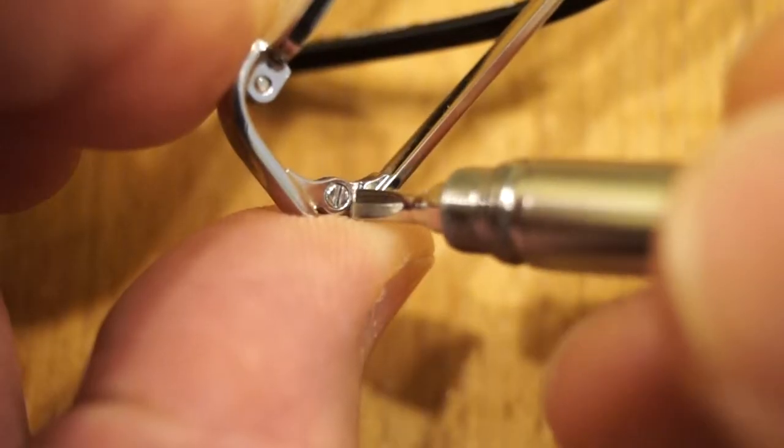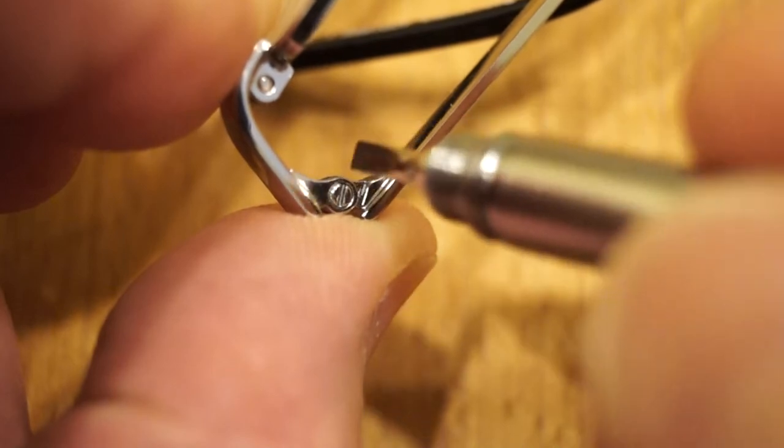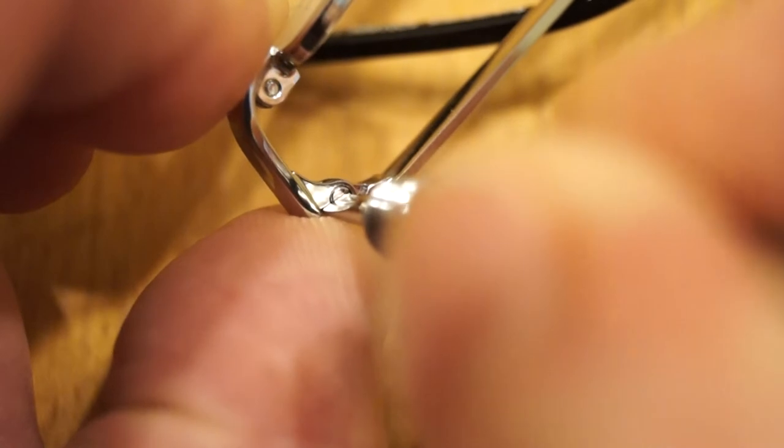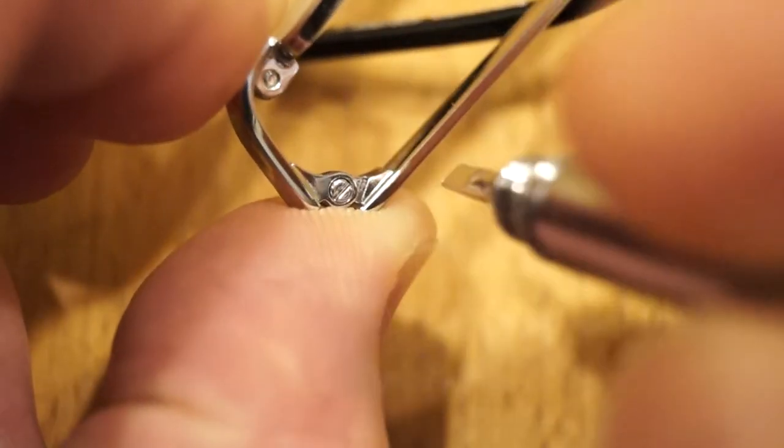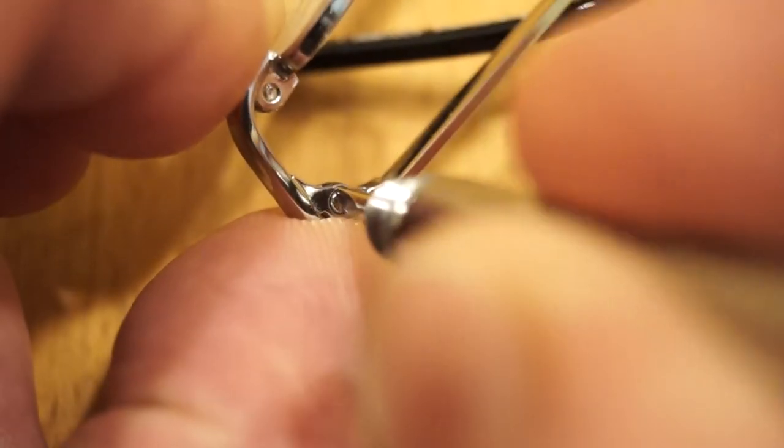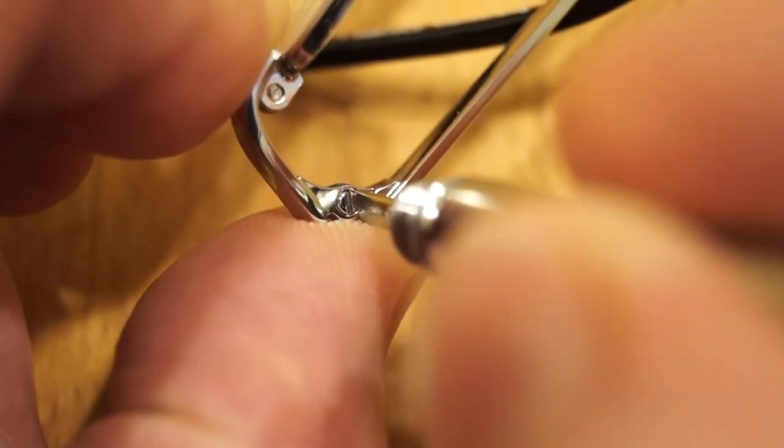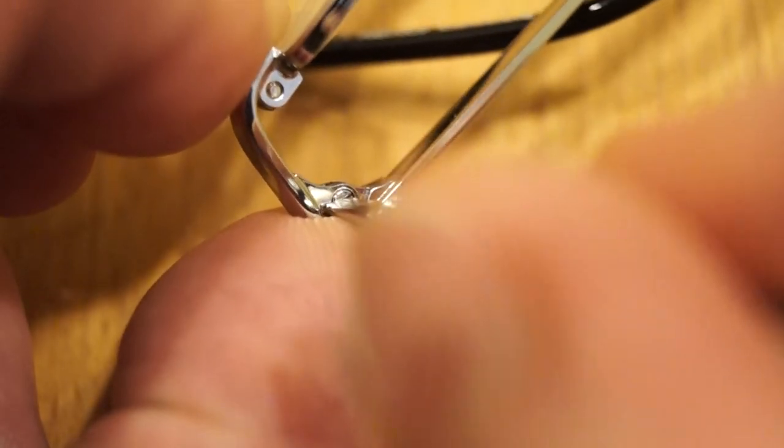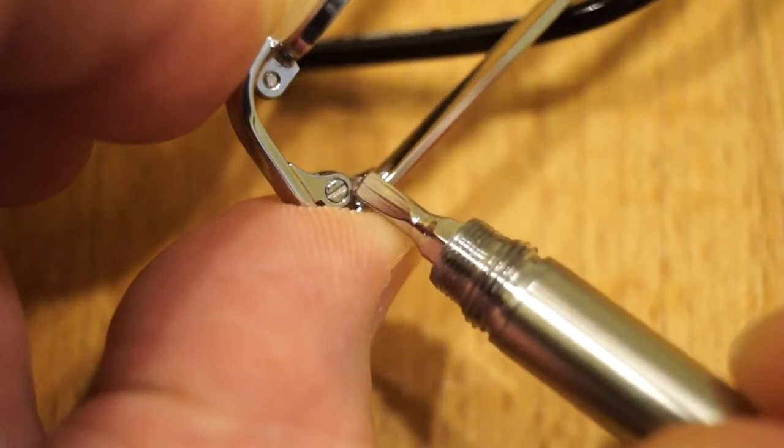I think the flat screwdriver bit is just a tad too big for a screw in glasses, but it will do them up at a pinch. As you can see here I loosened it off and will fully tighten it, but once you get tight it tends to slip out a little bit. So it's just a little bit too big for doing glasses but it will do them at a pinch.